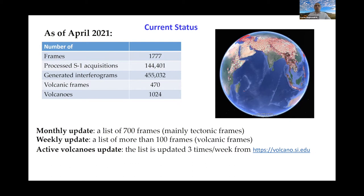Among the total number of frames, we have 470 volcanic frames which cover more than 1,024 global volcanoes. Here is the updating policy that we follow in the LICSAR system. We have a list of about 700 frames which are being updated on a monthly basis — these are mainly the tectonic frames. We also have a list of 100 frames updated on a weekly basis, mainly the volcanic frames. Finally, we have a list of active volcanoes received from the Global Volcanism Program database, more or less three times a week, and the number of frames in this list is variable and depends on the volcanic activities.